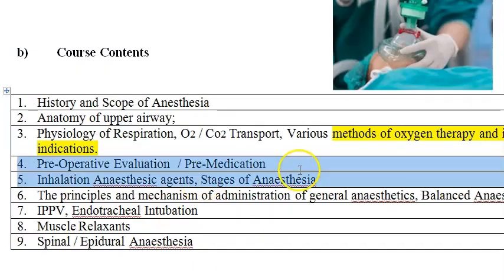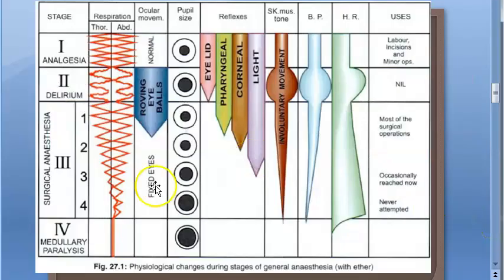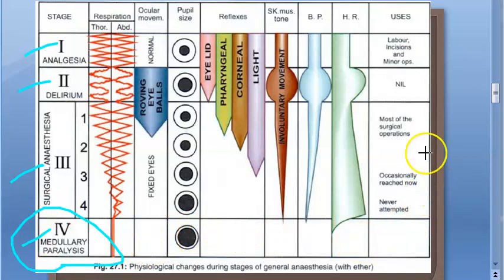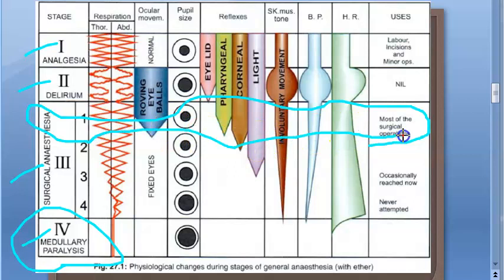They expect you to know the stages of anesthesia, which we have covered in pharmacology. Stage 1 is analgesia, Stage 2 is delirium, Stage 3 is surgical anesthesia, and Stage 4 is medullary paralysis — but it should not reach Stage 4. Most surgical operations are performed at Stage 3, sub-stage 1.